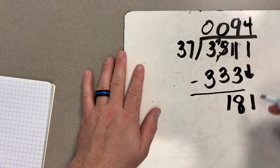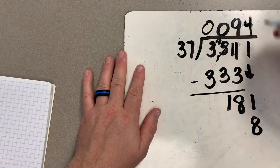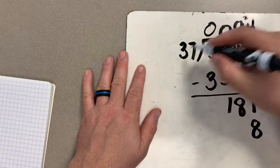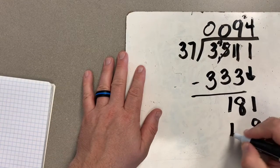So, 4 times 7 is 28. 8, I'll carry my 2 up. 4 times 3 is 12. Plus 2 more gives me 14.